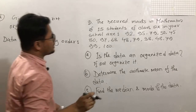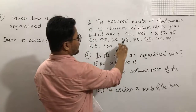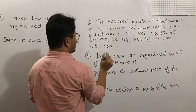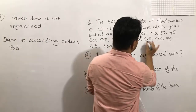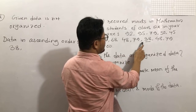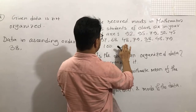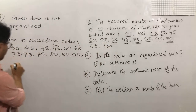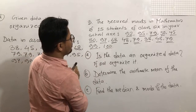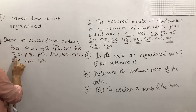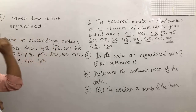Find the smallest number — which is 38. Then 45, 48, 48, 50, 68, 79, 79, 79, 80, 92, 95, 97, 99, and 100. So there are 15 data values arranged in ascending order.